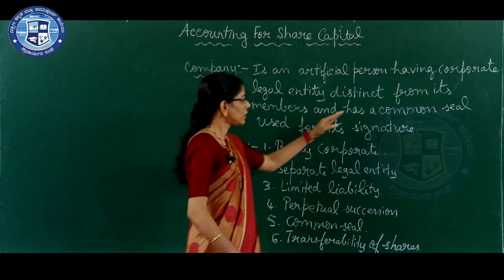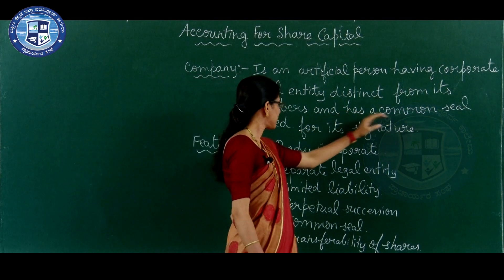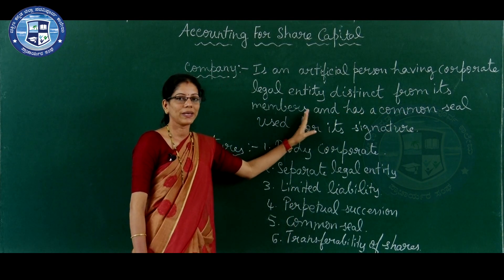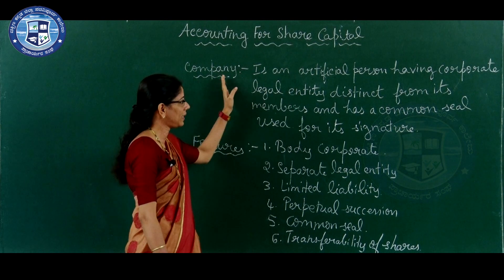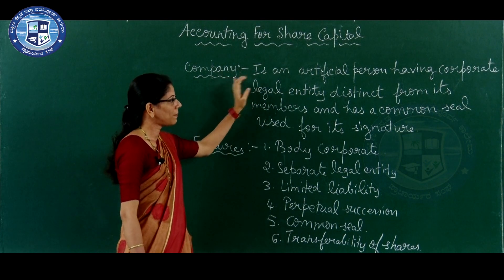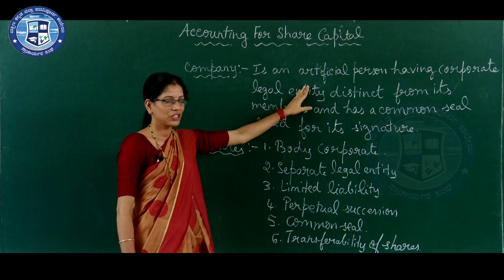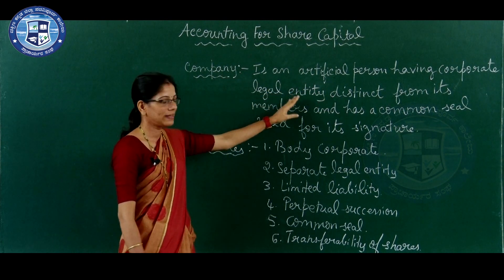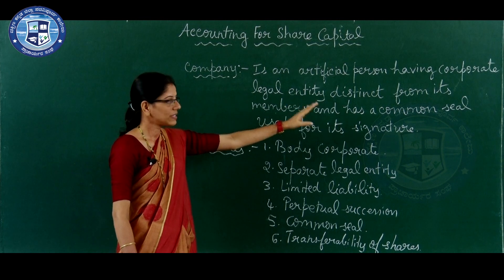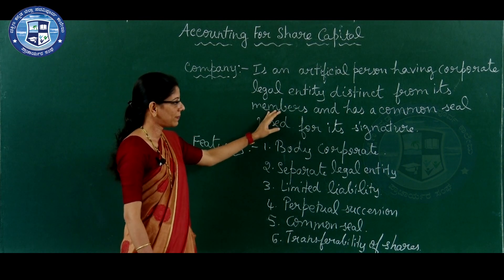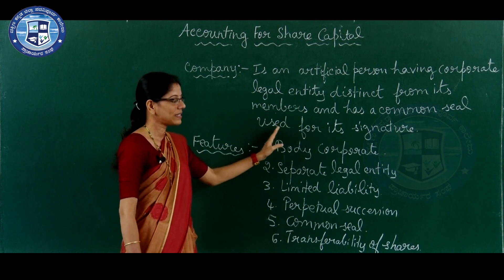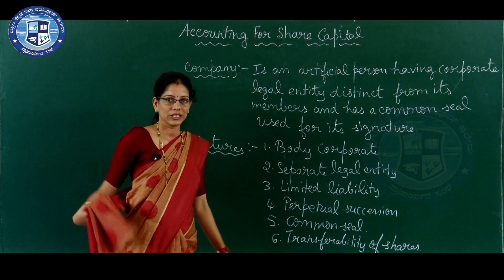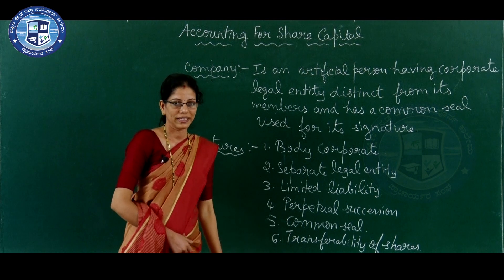Having corporate legal entity means it has its own existence under the Companies Act. Distinct from its members means the members and the company are considered as two separate parties. And it has a common seal - every company has its own seal and it is used for its signature in the main documents of the company.